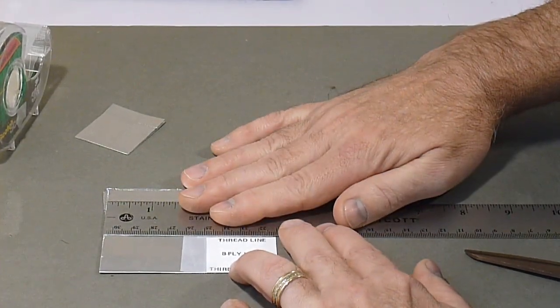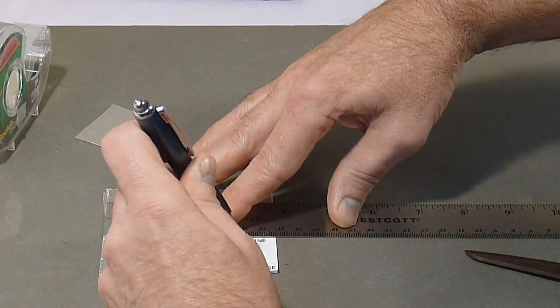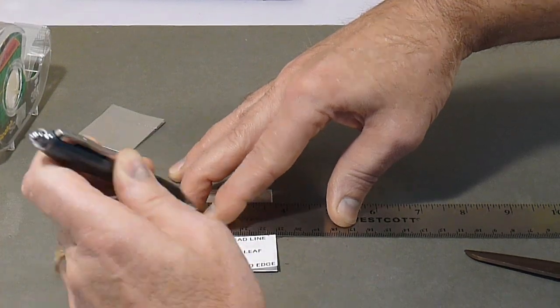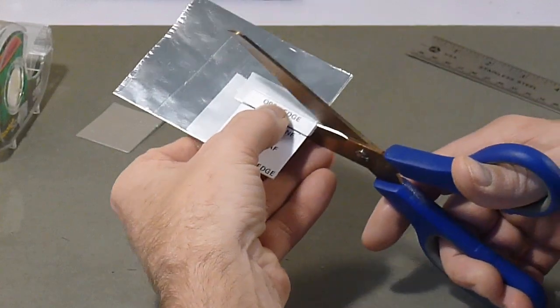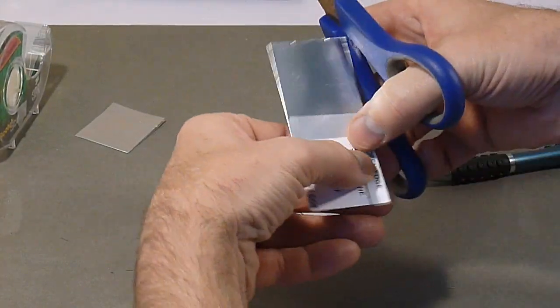With a single straight edge and a pin, score a line on the pattern's thread line. Carefully cut the aluminum foil sheet along the two edges of the leaf pattern.